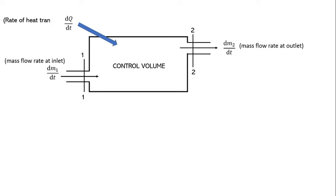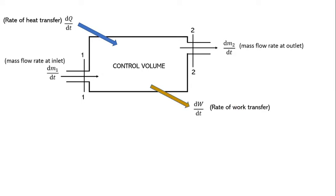Let dQ/dt be the rate of heat transfer to the control volume, and dW/dt be the rate of work transfer by the control volume. We consider a datum line where z₁ is the height of the inlet pipe from the datum line and z₂ is the height of the outlet pipe from the datum line.